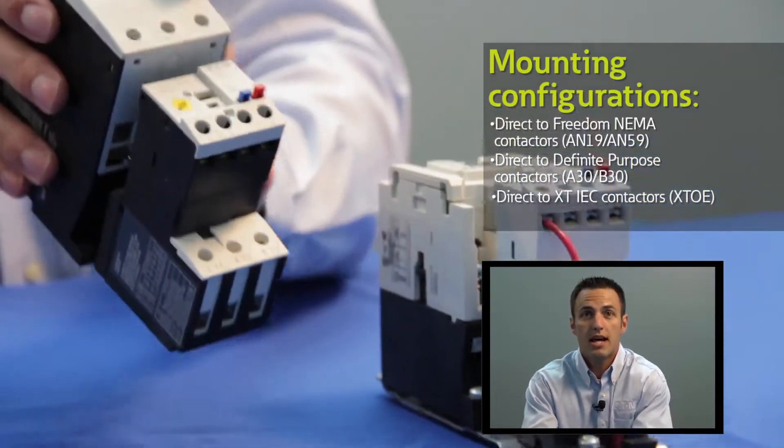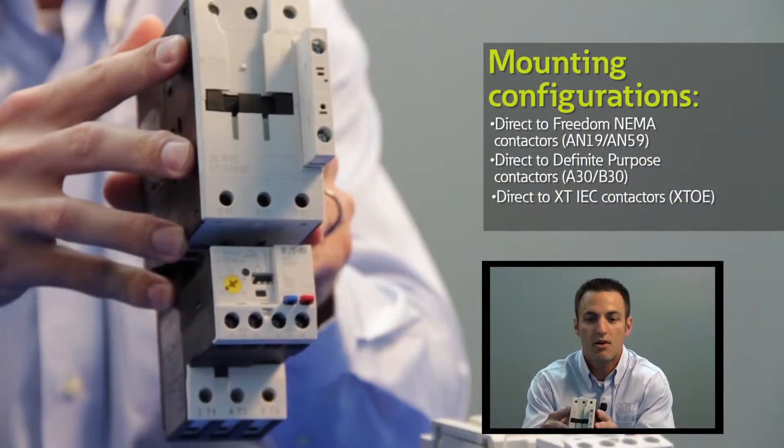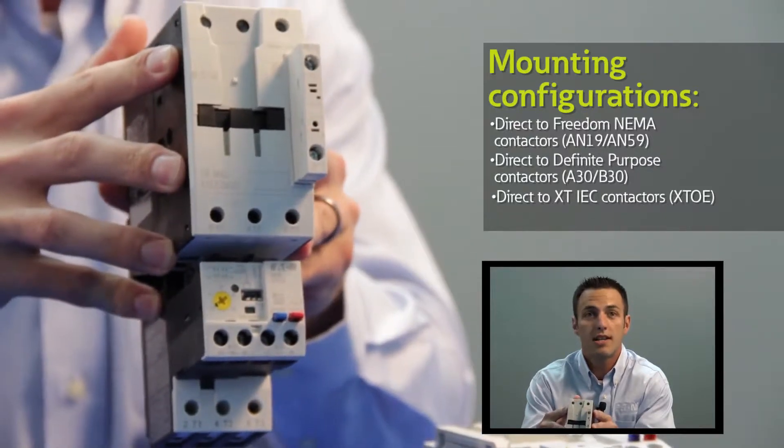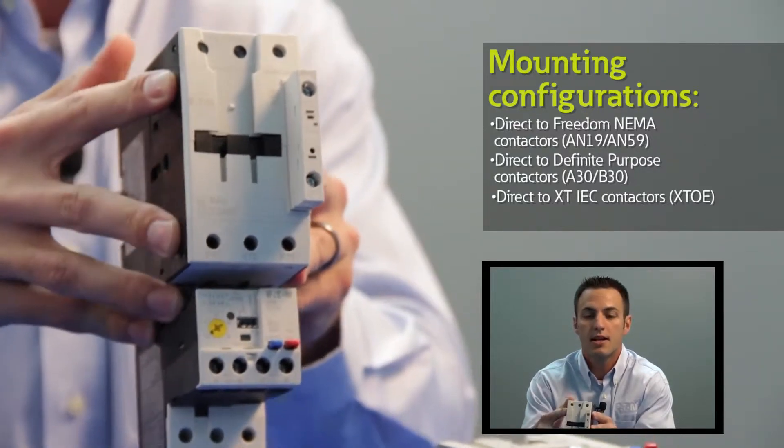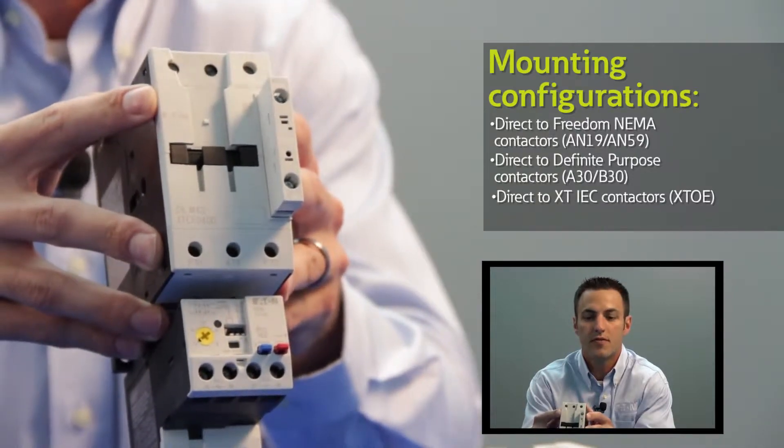Direct mounted to the XT IEC contactors up to 175 amps, we call this the XTOE. Above 175 amps we also utilize an external current transformer solution for applications up to 1500 amps.